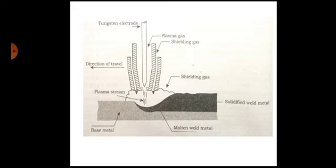To initiate the arc in plasma arc welding, a low current pilot arc is struck between the tungsten electrode and the nozzle around it.